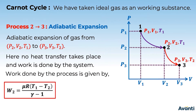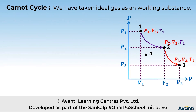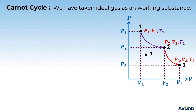Here, γ is basically Cp/Cv for the ideal gas that we are subjecting to this process. So we now have the work done for the first two steps. The next step is moving from state 3 to state 4.